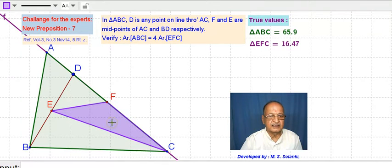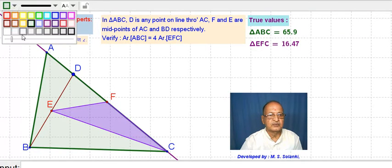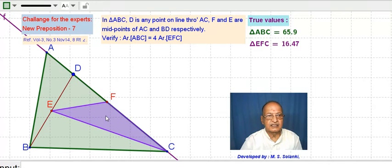This triangle. Area of this triangle is one-fourth of ABC, or area of ABC is 4 times the area of triangle EFC. Alright, this is the green triangle.